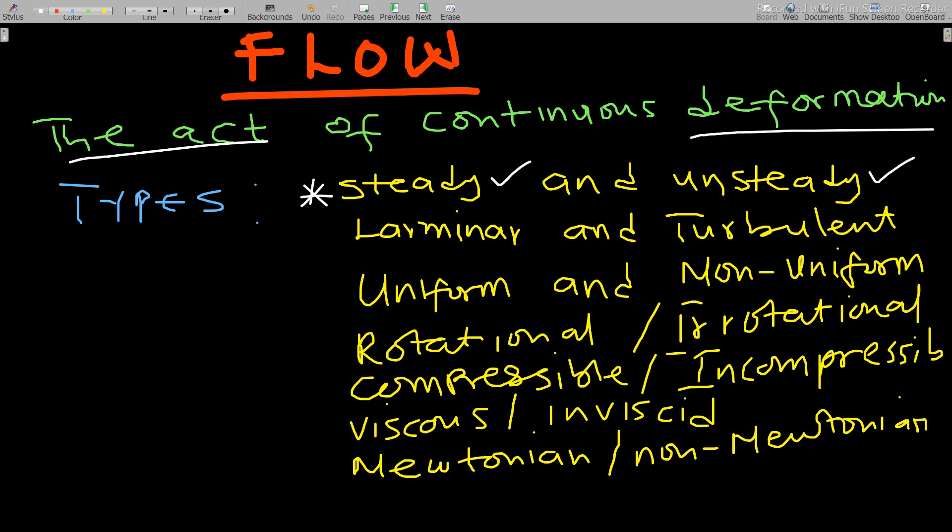Laminar flow deals with the paths that fluid particles take. When the paths of all fluid particles are parallel to each other and smooth — they don't cross each other — then we are talking about laminar flow.